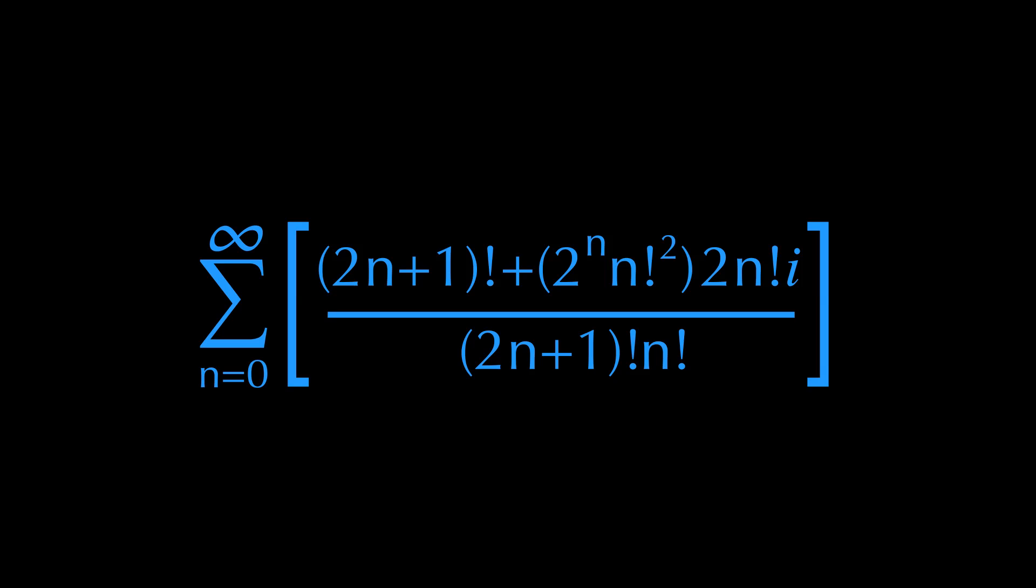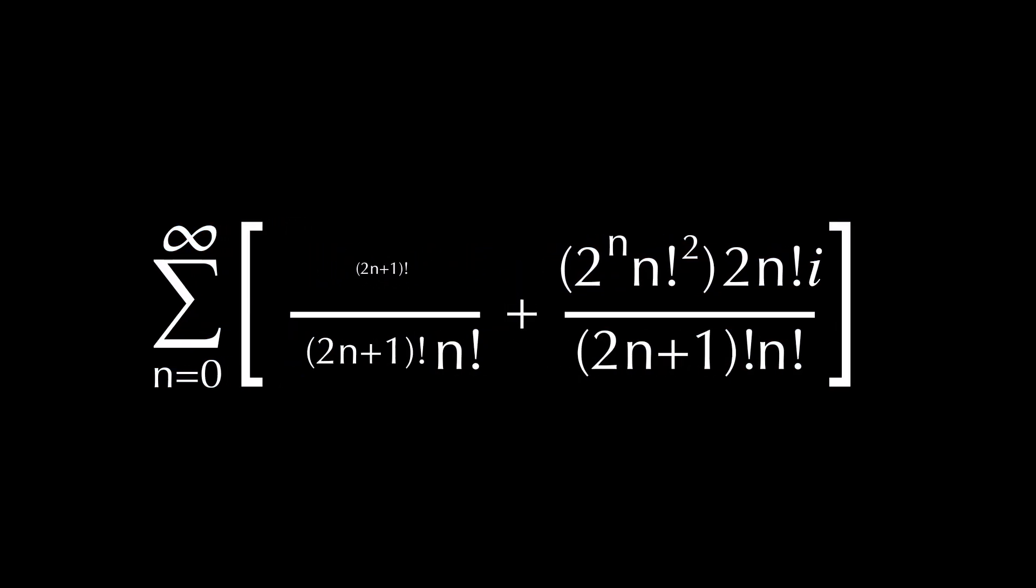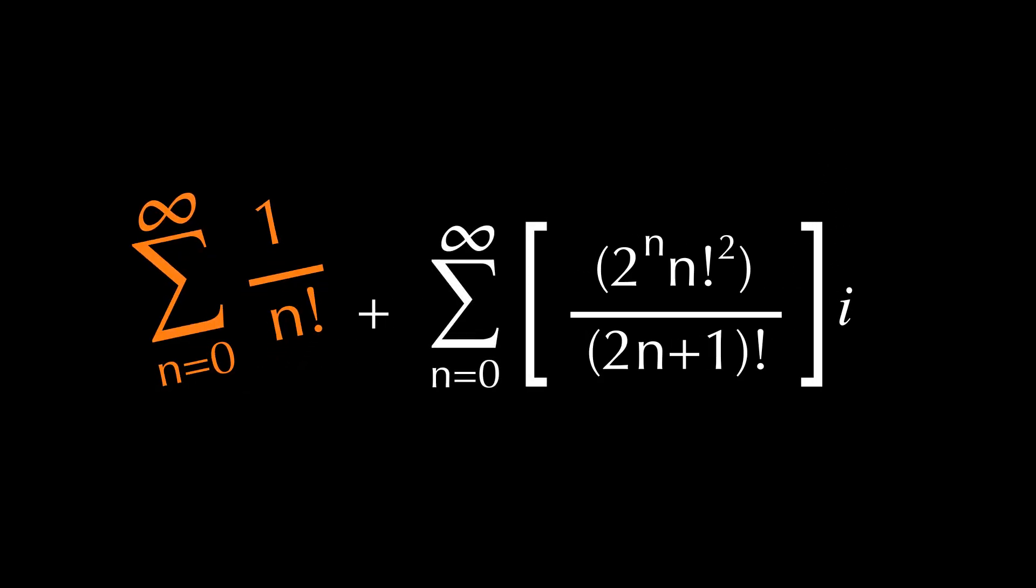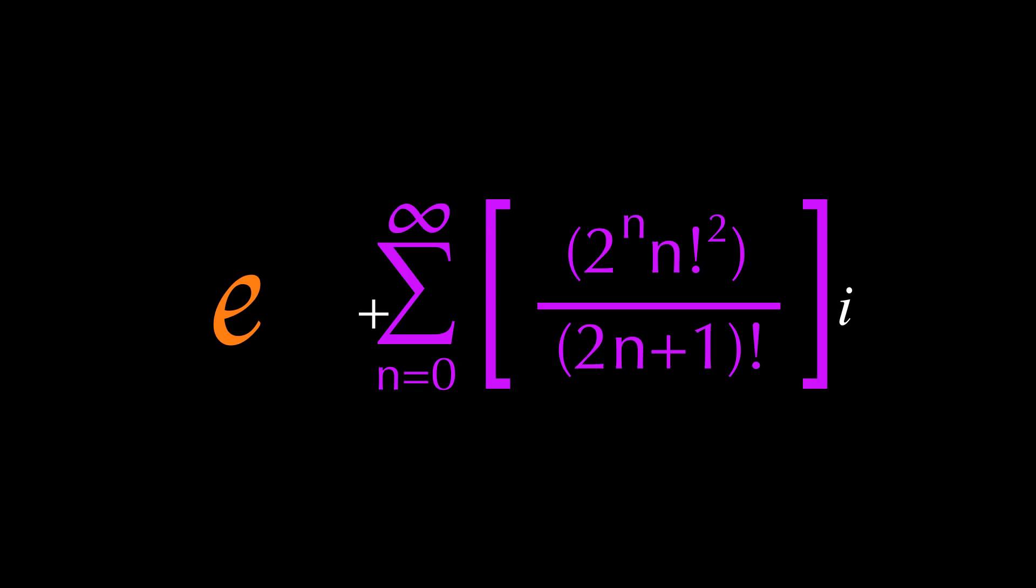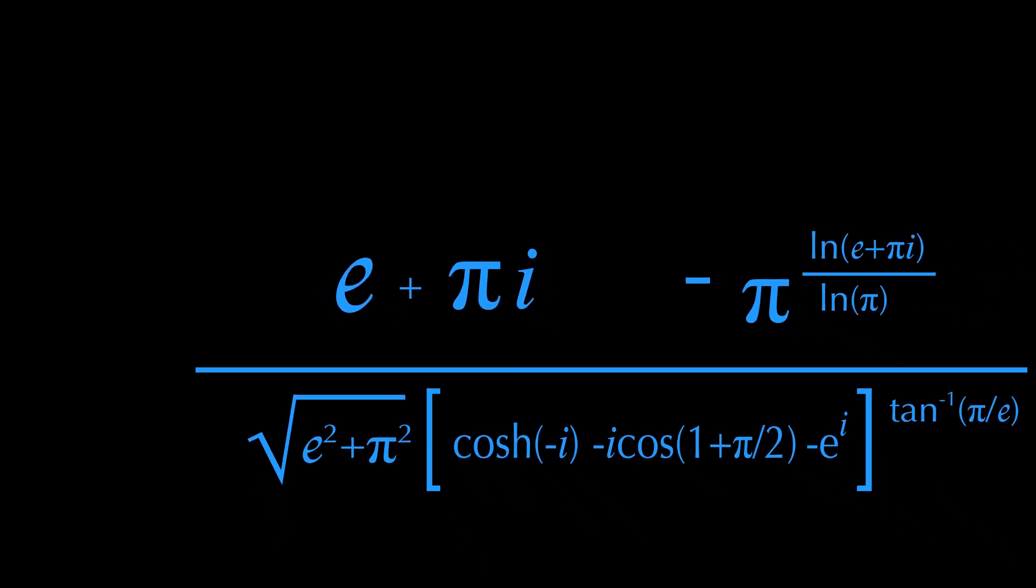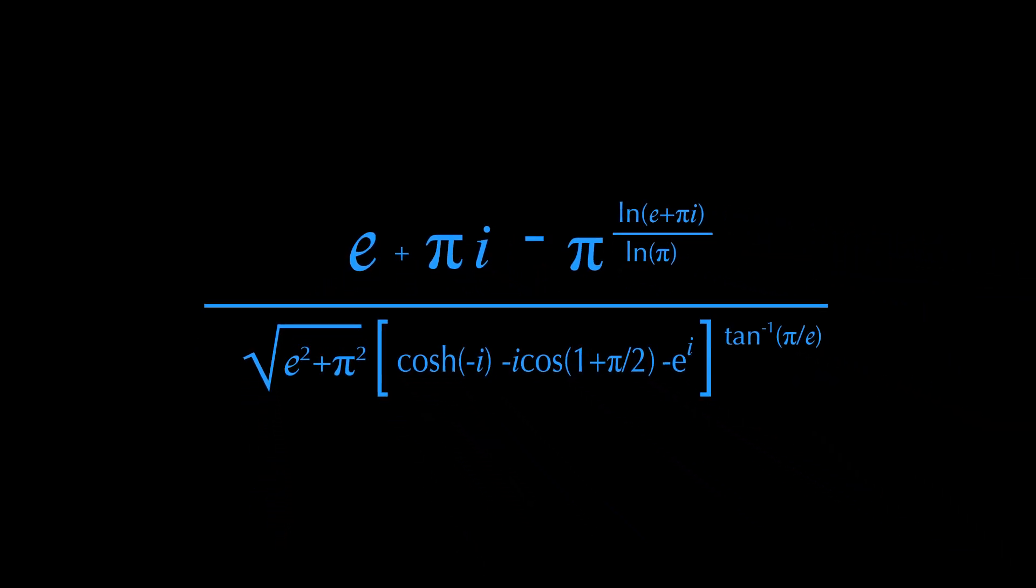Now on top you have this scary looking summation. It actually is a combination of two other sums. Moving some of the terms around, you can see that I basically combined the Taylor series for e with this other sum which gives us pi. And finally that i makes the whole thing into a complex number. I thought using e and pi in this way would be an interesting exercise.